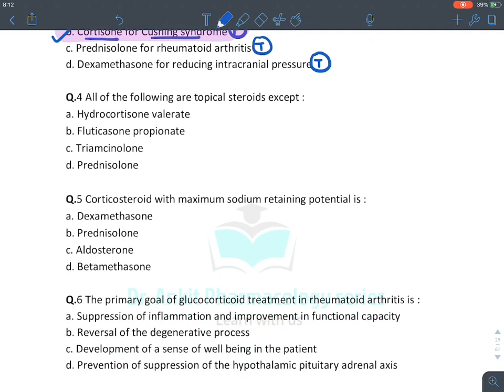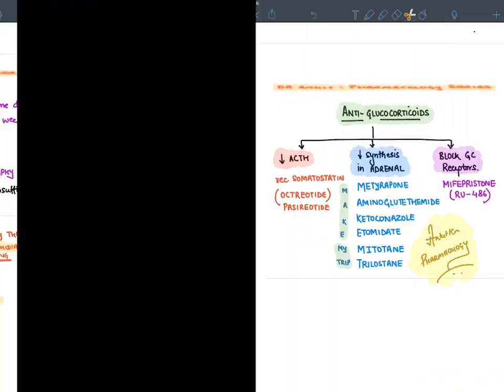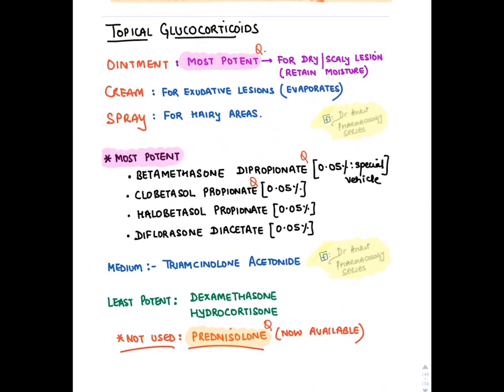For the question on topical steroids — the answer is prednisolone (not a topical steroid, though recently available). Topical corticosteroids: ointment is the most potent preparation (highly lipid soluble, penetrates easily), used for dry and scaly lesions; cream for exudative lesions; spray for hairy lesions. The most potent topical glucocorticoids are betamethasone dipropionate, clobetasol propionate, halobetasol propionate, and difluorasone diacetate. Medium potency: triamcinolone. Least potent: dexamethasone/hydrocortisone.